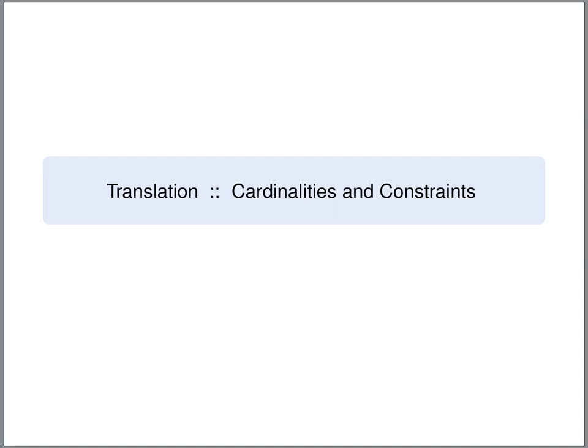Next, we will have a look at how the cardinality constraints in entity relationship diagrams are translated into the relational model. We will see that we will make use of eliminating tables and integrity constraints to model the cardinalities as closely as possible.